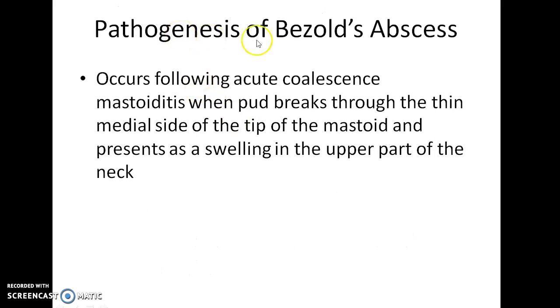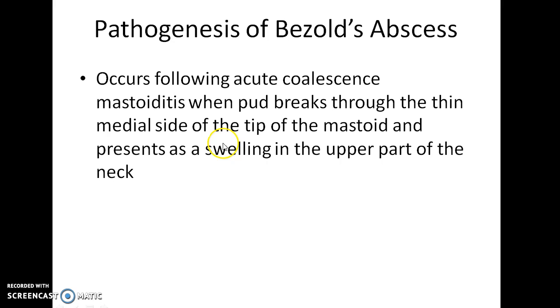What is the pathogenesis of Bezold's abscess? Bezold's abscess occurs following acute coalescent mastoiditis, when pus breaks through the thin medial side of the tip of the mastoid and presents as a swelling in the upper part of the neck.